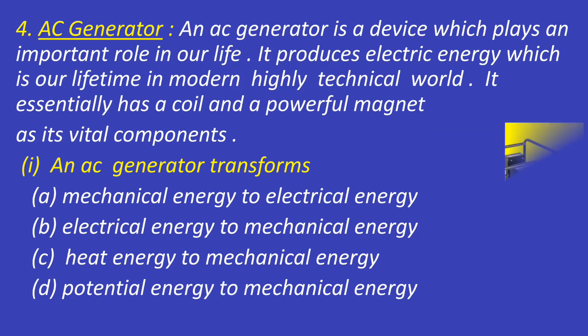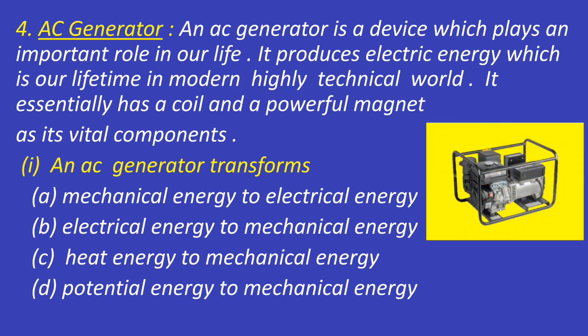Now another case study based on AC generator. An AC generator is a device which plays an important role in our life — it produces electric energy. In a modern highly technical world, it essentially has a coil and a powerful magnet as its vital components. Question 1: An AC generator transforms — mechanical energy to electrical energy, electrical energy to mechanical energy, heat energy to mechanical energy, or potential energy to mechanical energy. The correct answer is A — mechanical energy to electrical energy.